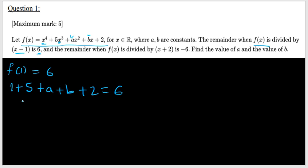So when you rearrange, a plus b will be, we can take all the constants, 1 plus 5 is 6, plus 2 is 8. When I take to the other side, it's going to be negative 2. So keep it, this is our first equation.